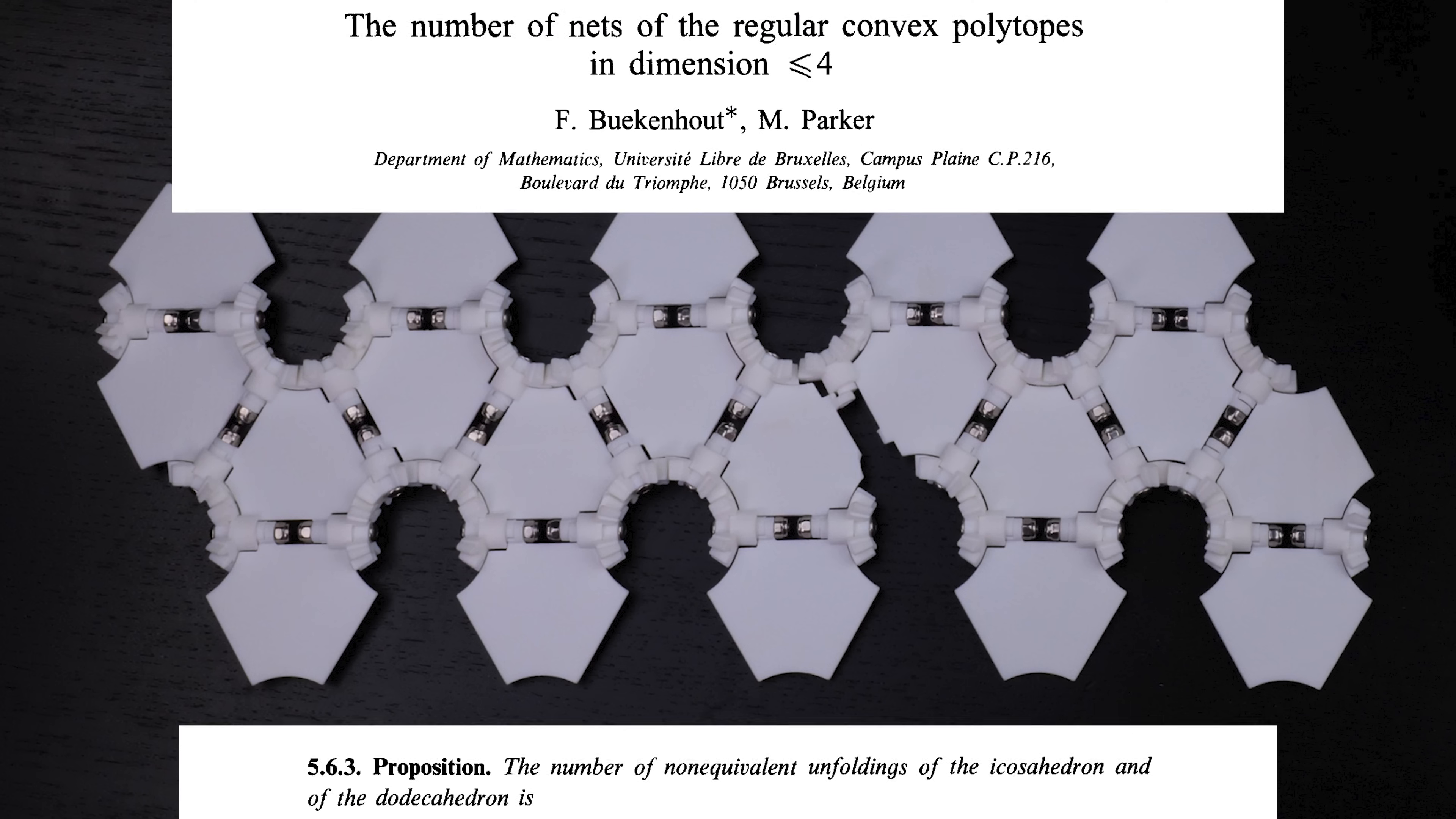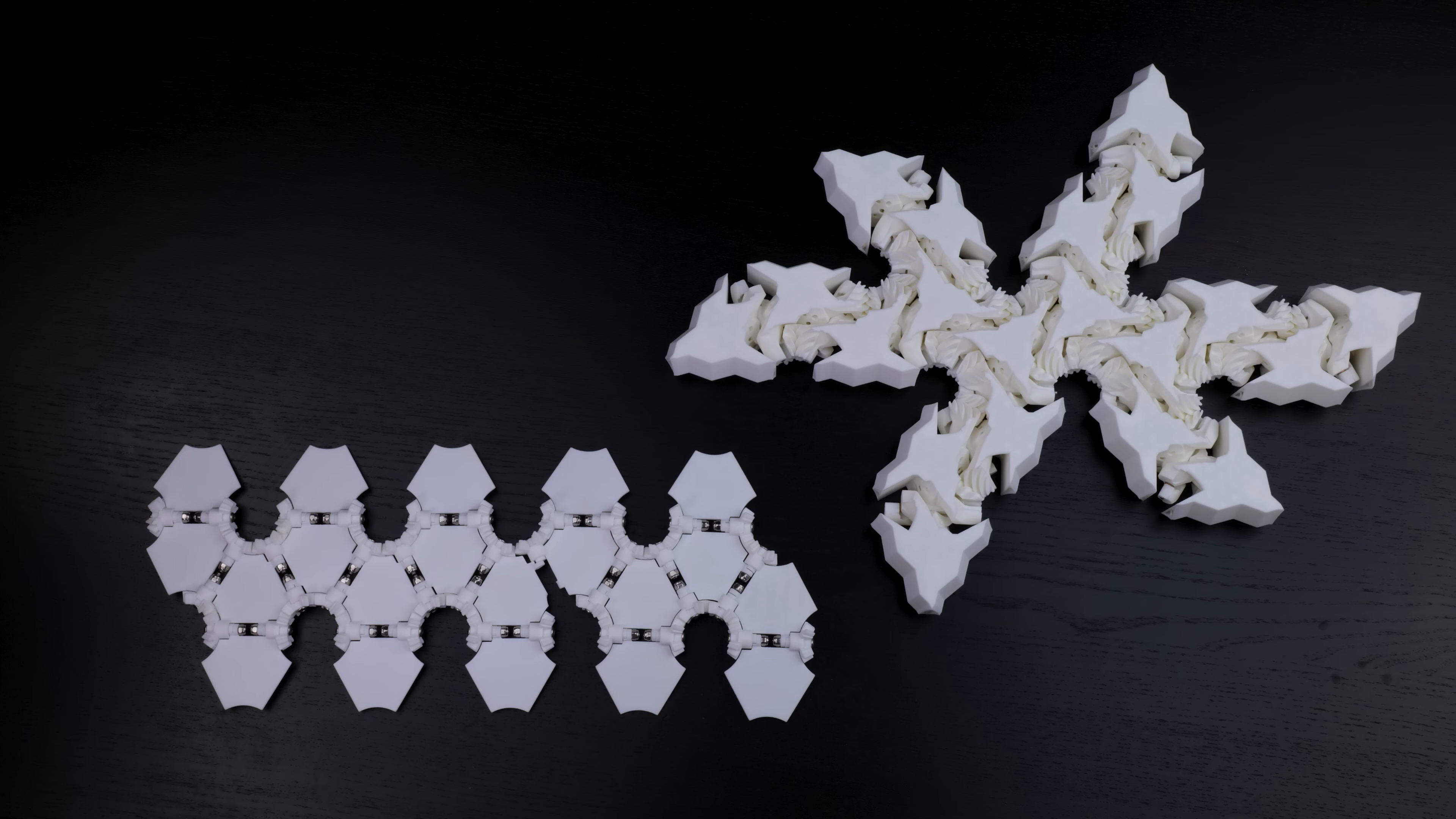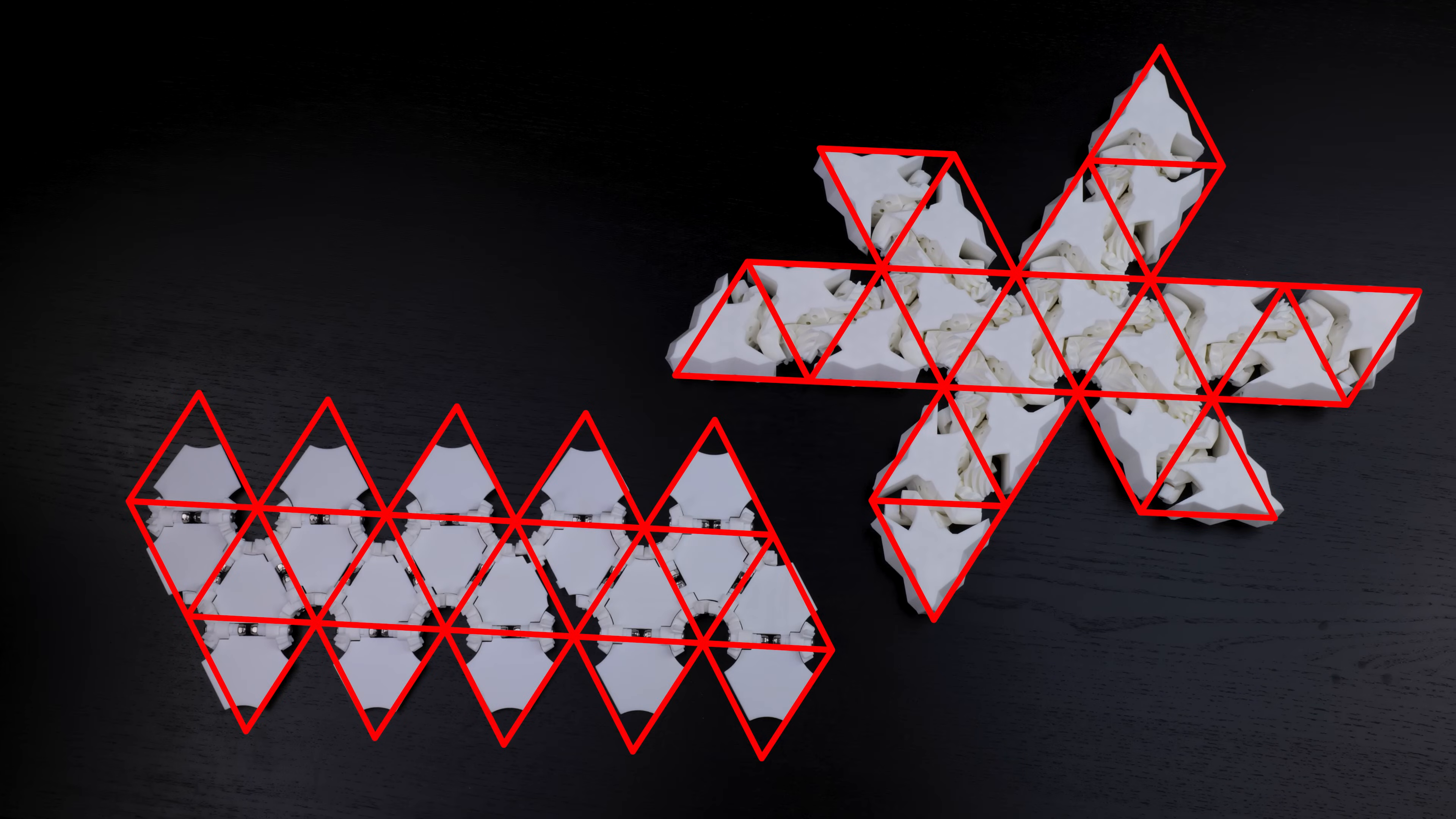But there are lots of other options. Apparently there are 43,380 distinct nets for the icosahedron. Here's what we went with for the second prototype, and it has a diameter of only ten. Again, you can check that there's no longer path. And this one is pretty symmetric. I ended up only needing to design seven different types of triangle part. Here's a question. Can you prove that there is no net for the icosahedron with diameter smaller than ten?